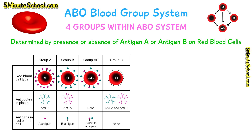Those who have blood group A have antigen A present in the blood and anti-B antibodies. Group B has antigen B present in the blood and anti-A antibodies. Group AB have both antigen A and antigen B present and no associated antibodies. Group O have no antigens present in the blood but have anti-A and anti-B antibodies.